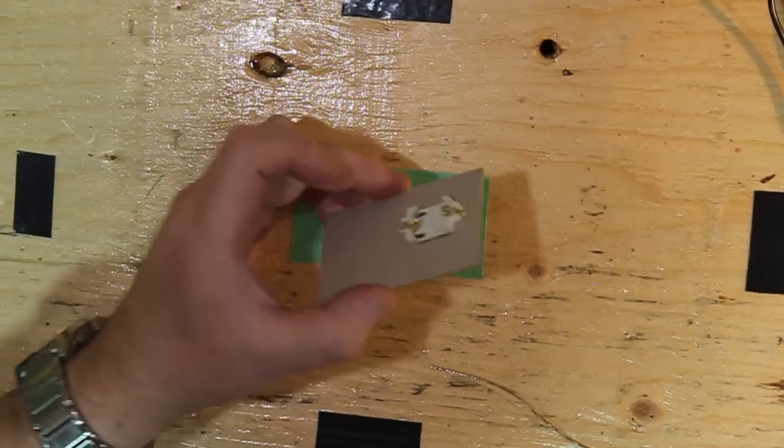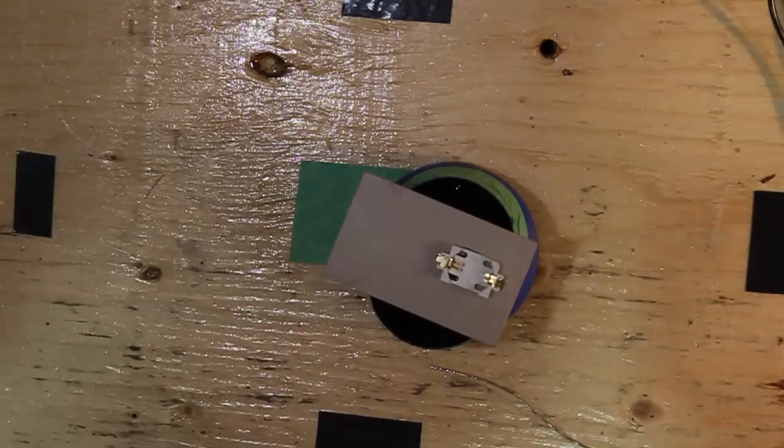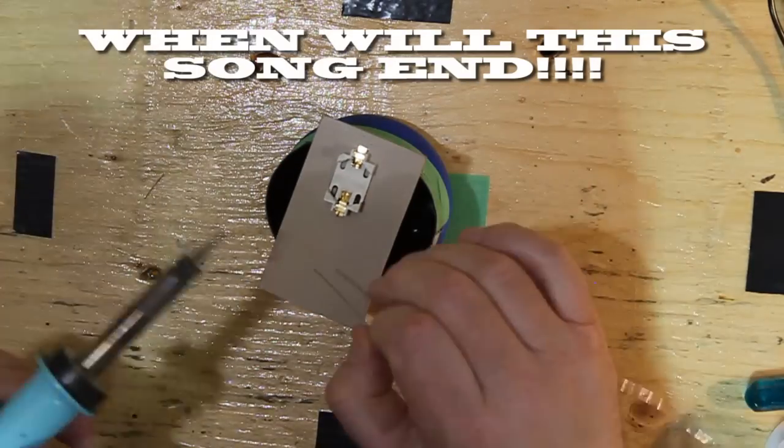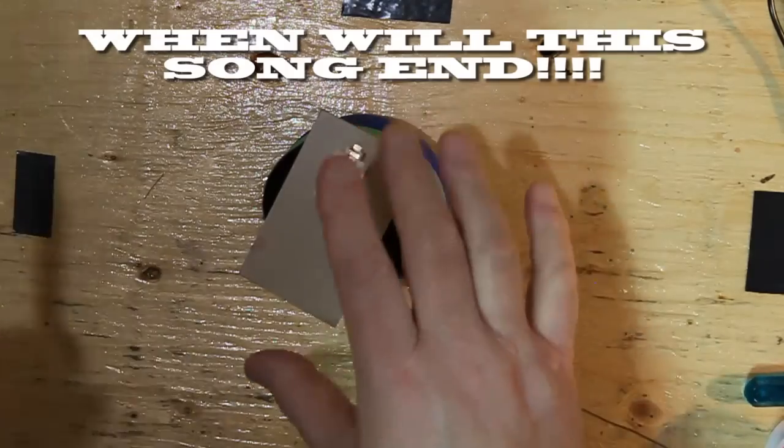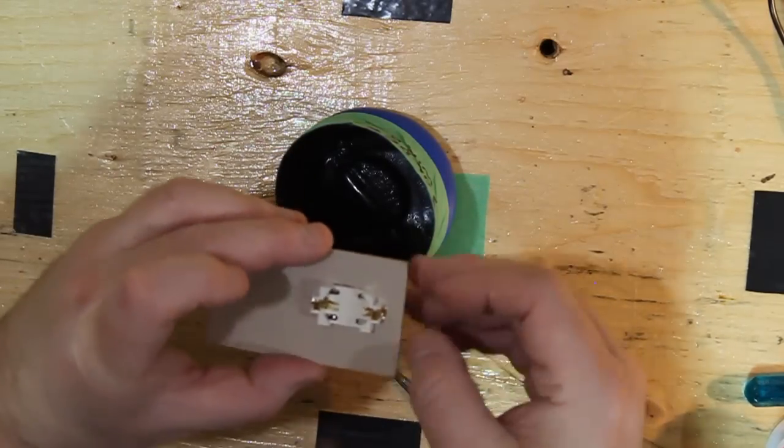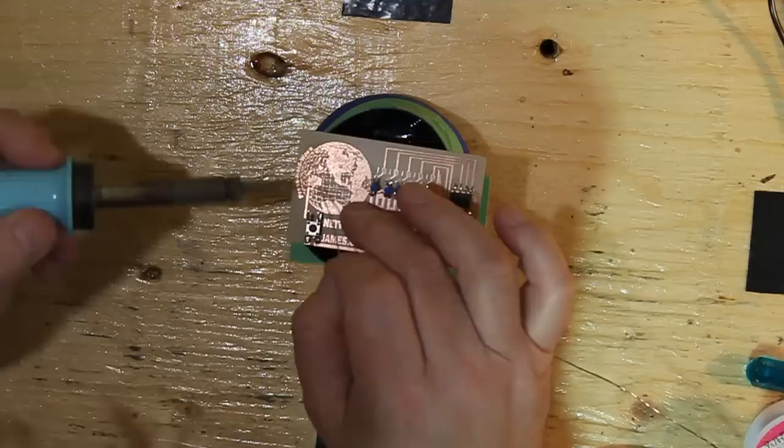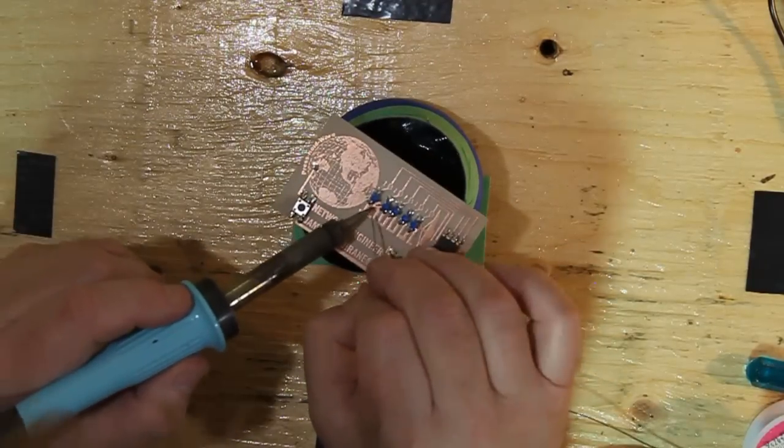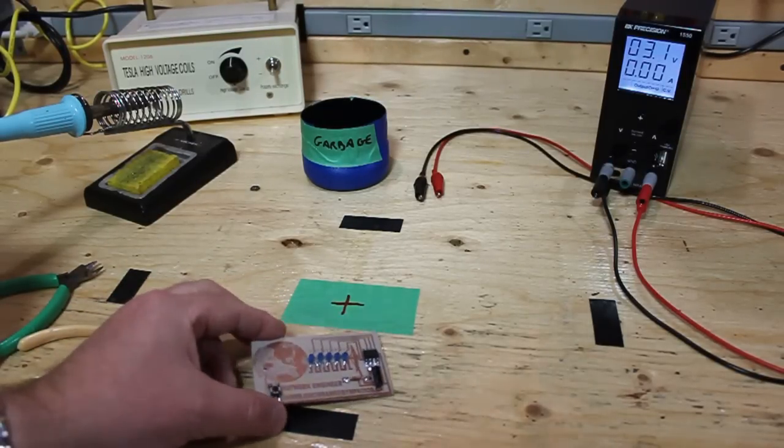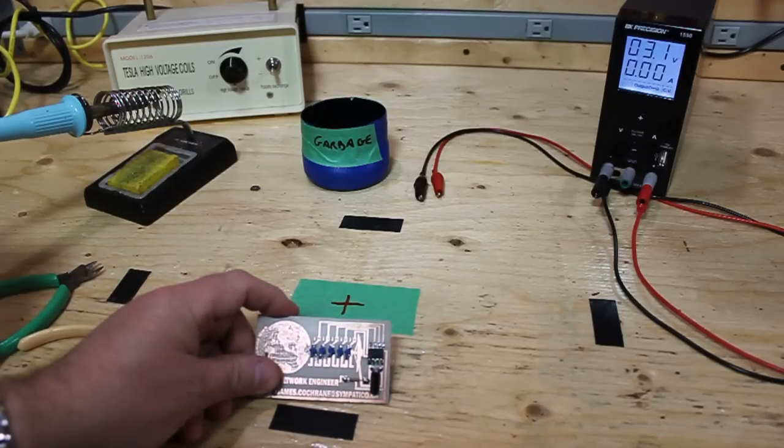All right, I glued the battery holder onto the back and pre-drilled the holes. I didn't want to show you that because it's pretty boring stuff. So, I've just got to solder on the connector and we are done.